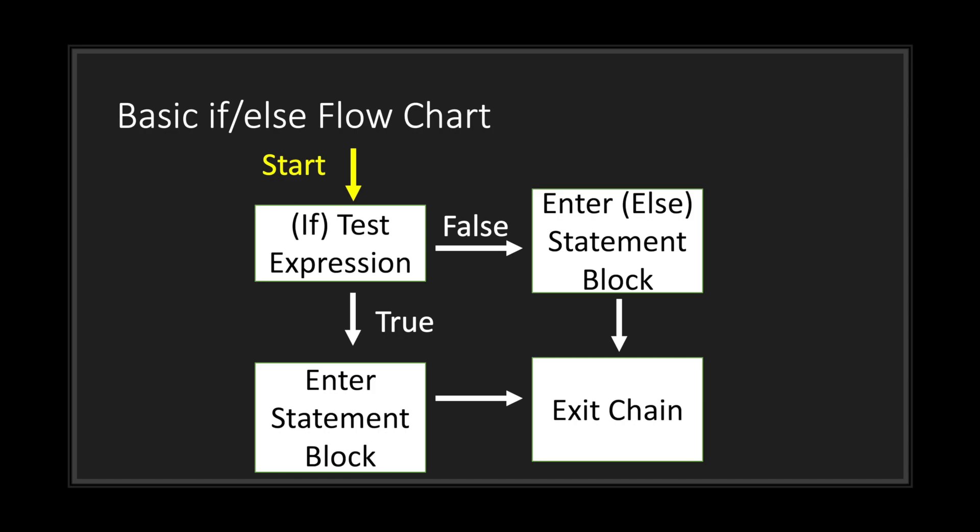Now let's take a look at the flowchart for a basic if-else statement. We start our code and enter the if test expression. If the test expression is true, we enter the if statement block. If it is false, we enter the else statement block and execute the code inside. No matter which one we run, we exit the chain after completion. In an if-else statement, we're either going to run the if block or the else block — we cannot escape that.